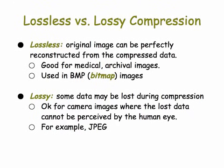This is contrasted with lossy data compression, where some data may be lost during the compression process. That's okay for lots of images we use, such as camera images, where the lost data can't even be perceived by the human eye. JPEG is an example of lossy image compression.